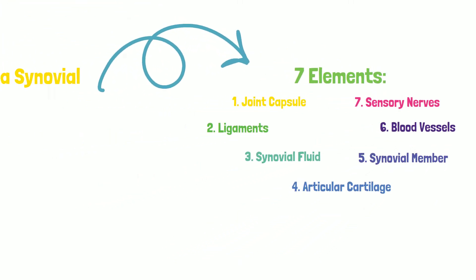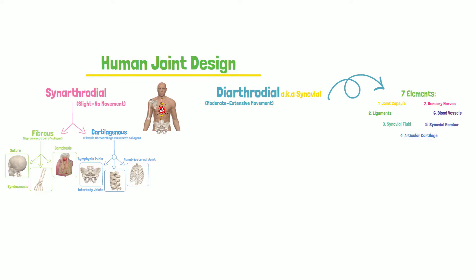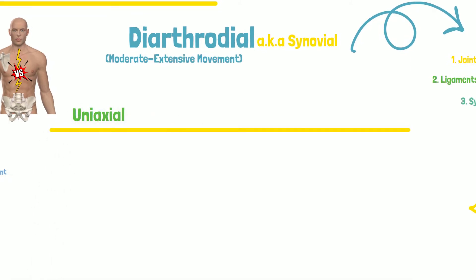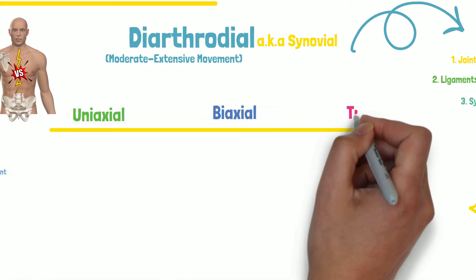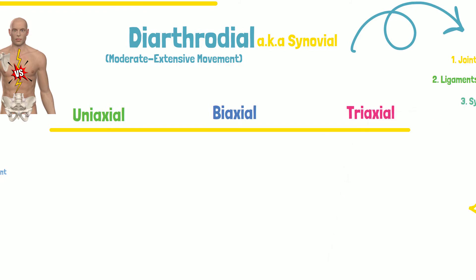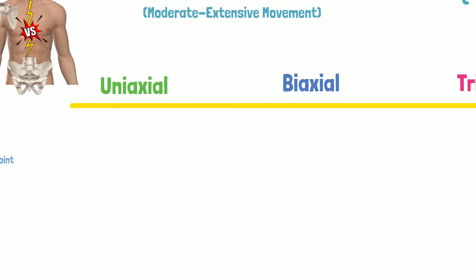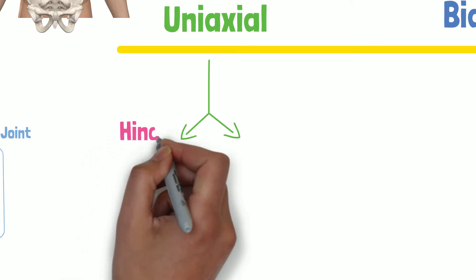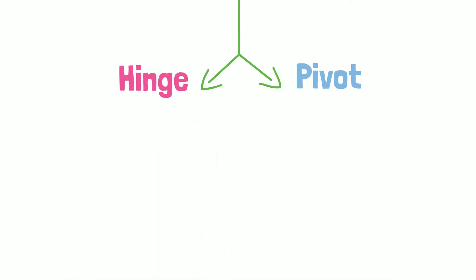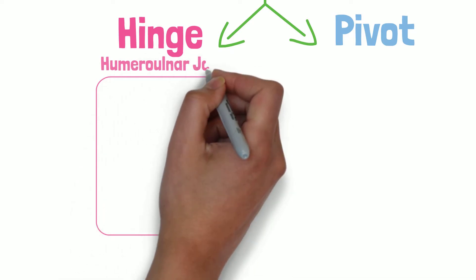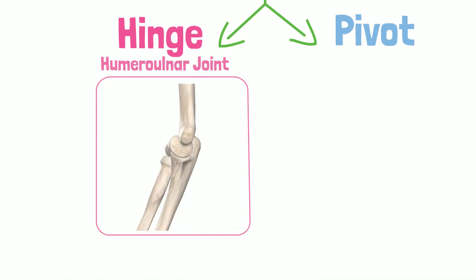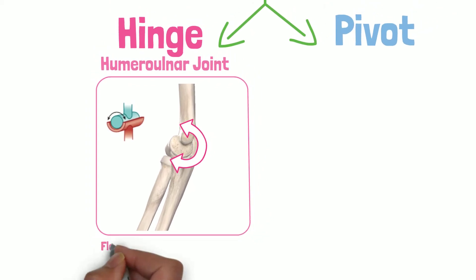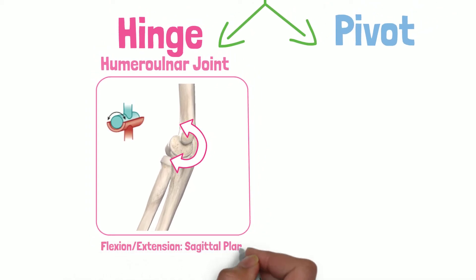Diarthrodial joints are classified according to the number of axes around which the motion occurs. There are uniaxial, biaxial, and triaxial diarthrodial joints. Uniaxial joints possess one axis of rotation and move in one plane of motion. They are classified into hinge and pivot joints. An example of a hinge joint is the humeroulnar joint. Hinge joints are the union of a convex and concave surface and typically move in a sagittal plane. The motions allowed are flexion and extension.